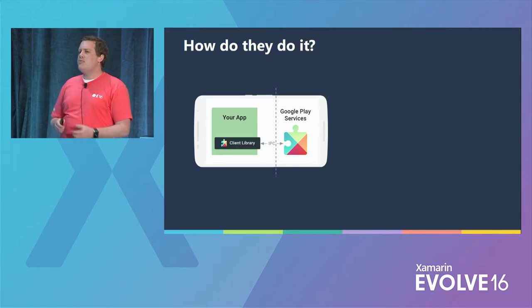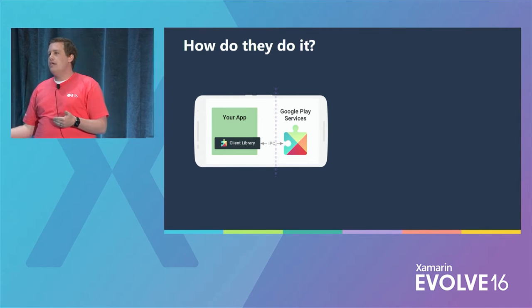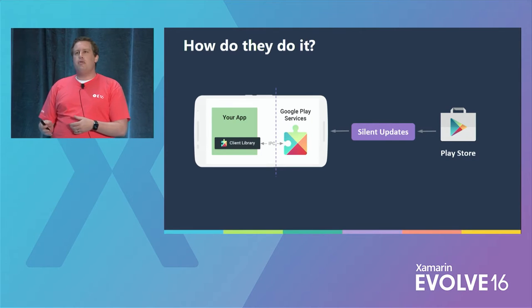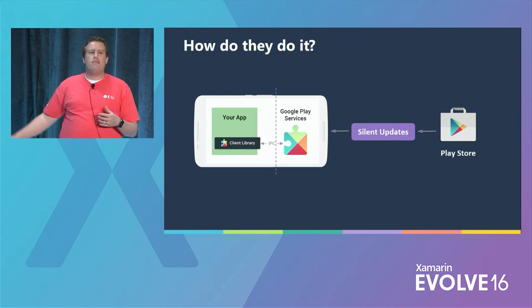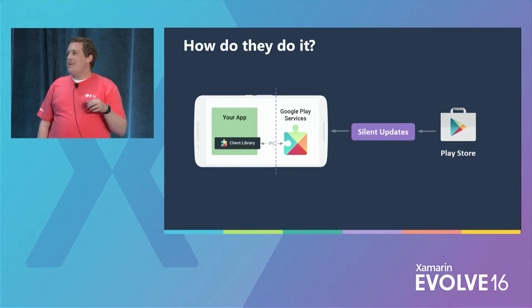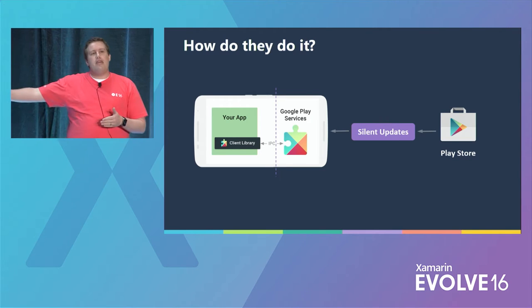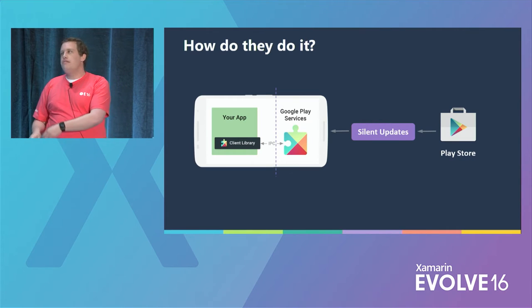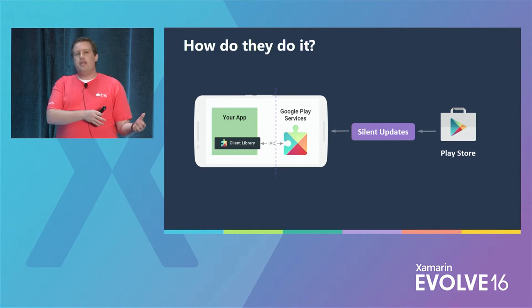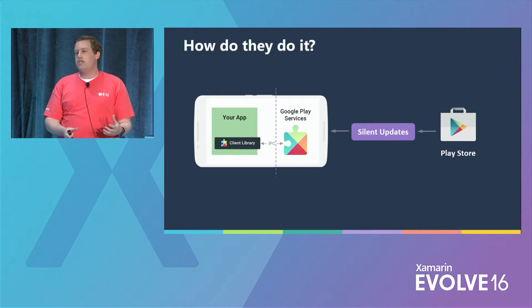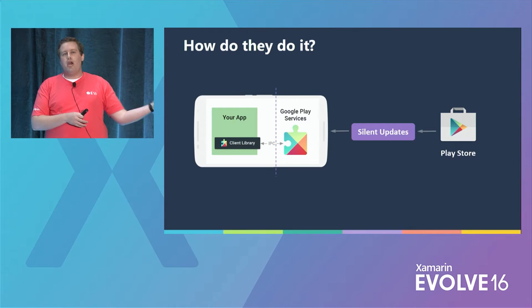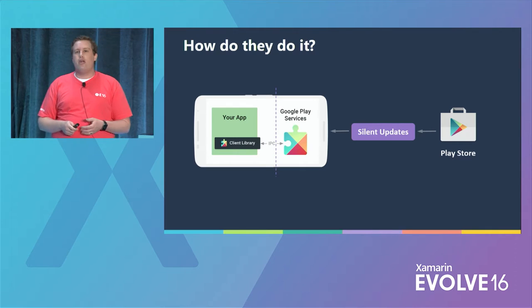How do they do this? They actually ship Google Play Services as an app, as an APK file. It goes on your device and gets silently updated every time there's a new version. Google actually waits until that APK file is almost completely rolled out to a maximum tipping point of devices before they ship the client library out to developers. That means you can be reasonably confident that when you get this new version with all these new APIs, you don't have to worry about it being available on devices — and you also don't worry about fragmentation of which devices are up-to-date with that app.